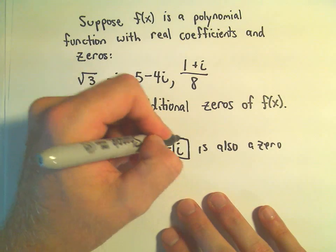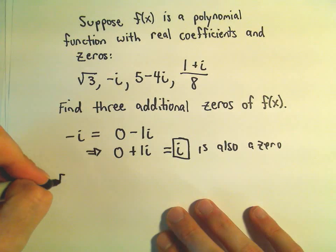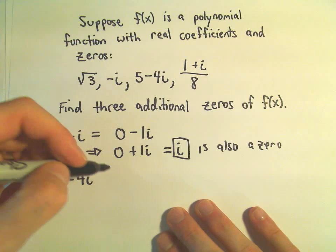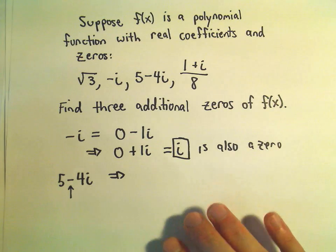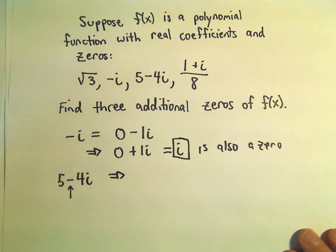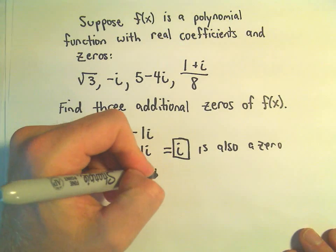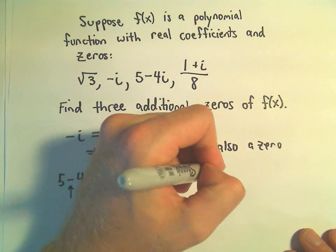So just flip the sign on it, is all it says. Since 5 minus 4i is a zero, again, the conjugate, all we do is just change the sign in the middle. So since 5 minus 4i is a zero, that means 5 plus 4i is also a zero.